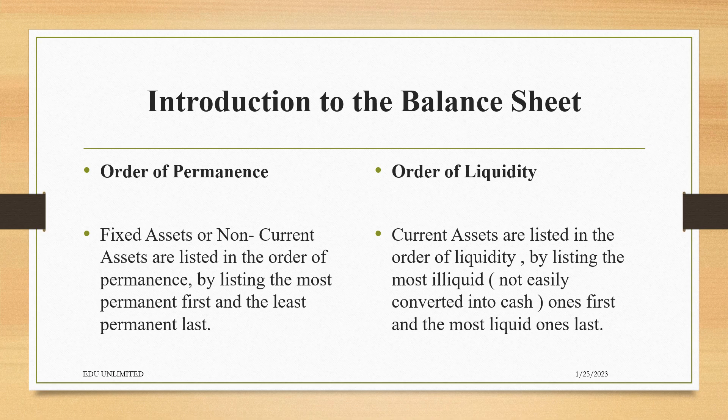As we look at this topic of Introduction to the Balance Sheet, we must define two terms: the Order of Permanence and the Order of Liquidity. Fixed Assets, also called non-current assets, are listed in the Order of Permanence by listing the Most Permanent Assets first and the Least Permanent Assets last. For example, Building will be listed before Motor Vehicle, and Fixtures will be listed after Motor Vehicle.